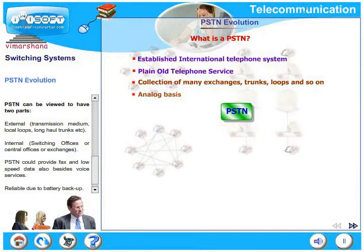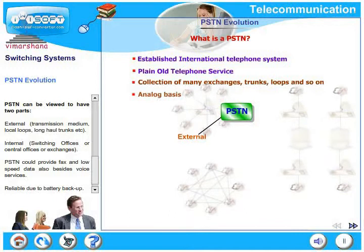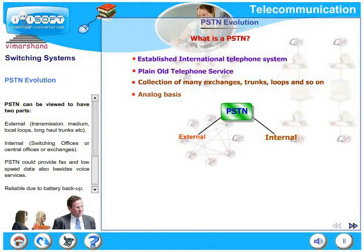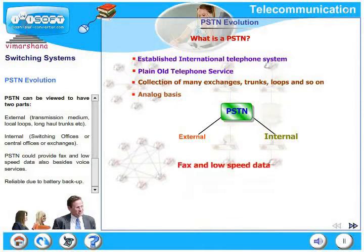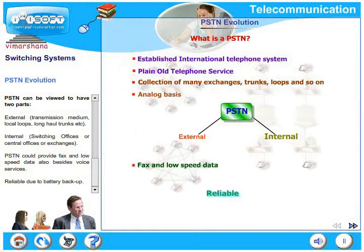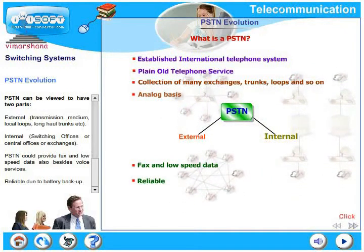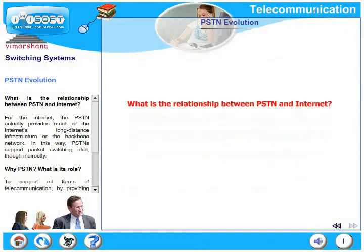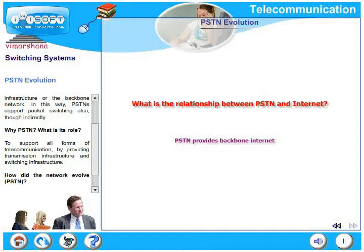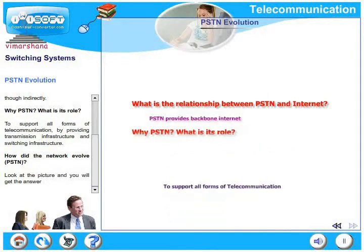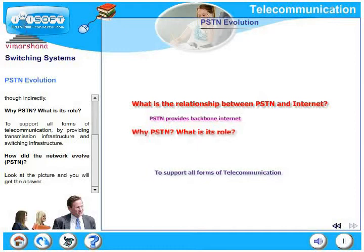PSTN can be viewed to have two parts: external, which consists of transmission medium, local loops, long-haul trunks, etc., and internal, which is switching offices or central offices or telephone exchanges. PSTN could provide fax and also low-speed data besides voice services, and is reliable due to battery backup. For the Internet, PSTN actually provides much of the long-distance infrastructure or the backbone network. In this way, PSTNs do support packet switching also, though indirectly. The basic role of PSTN is to support all forms of telecommunications by providing transmission and switching infrastructure.